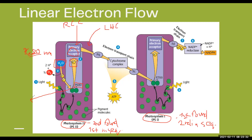P680 is known as nature's strongest oxidizing agent. What does it mean that it is an oxidizing agent? It means it will accept electrons — being the strongest means it readily and easily accepts electrons from any source. In this case, the electron comes from the hydrogen part of water.